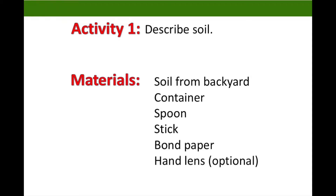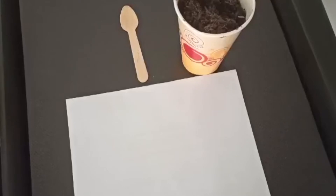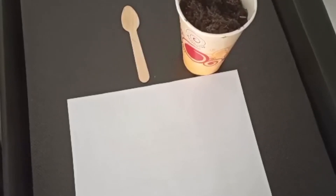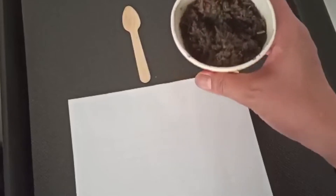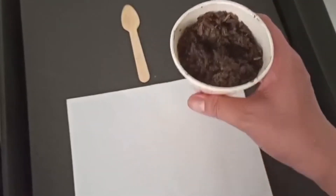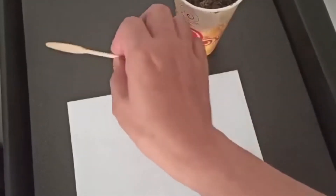For our activity, get some soil sample in your area and place it in a container. Scoop at least 2 tablespoons of soil and place it on a bond paper. Using a stick, observe your soil sample. Describe the color, texture, and odor, and write down things that you see in your sample.